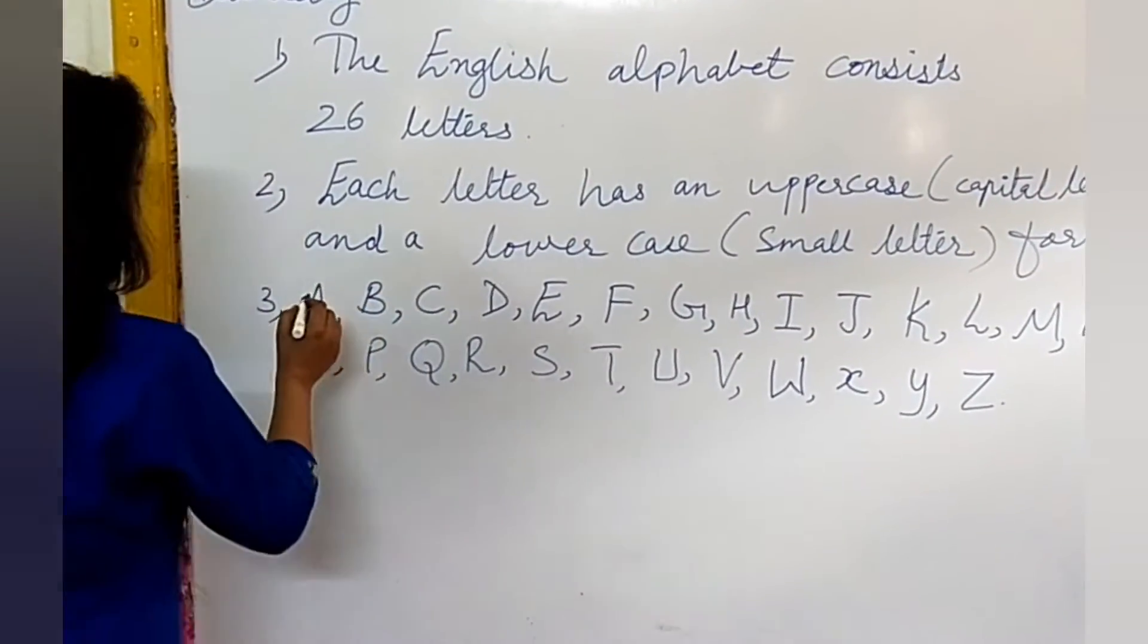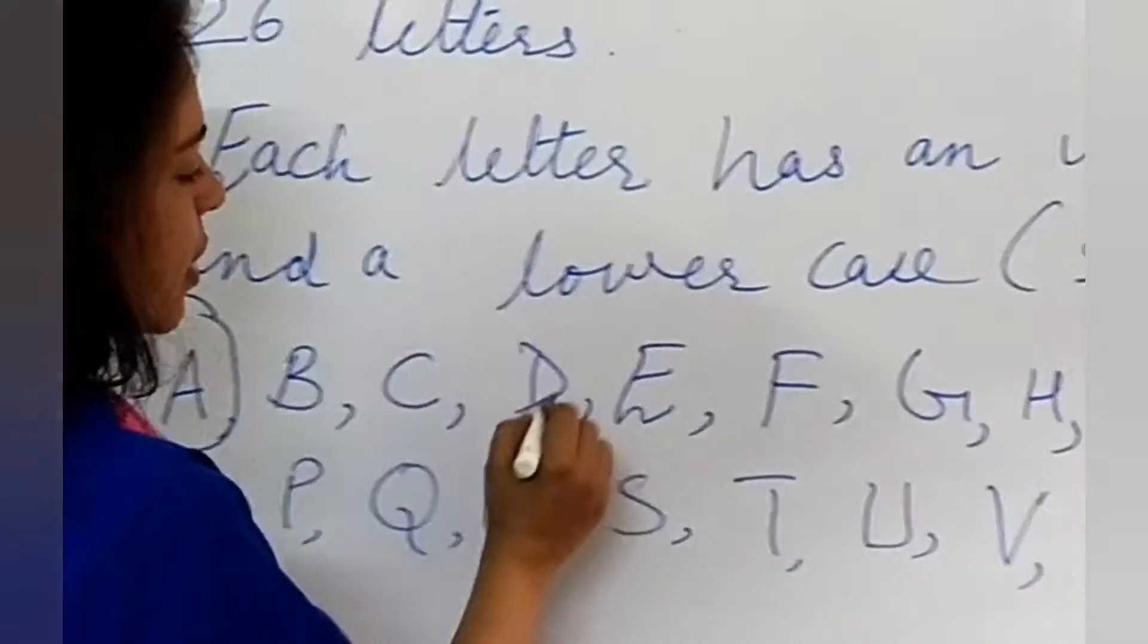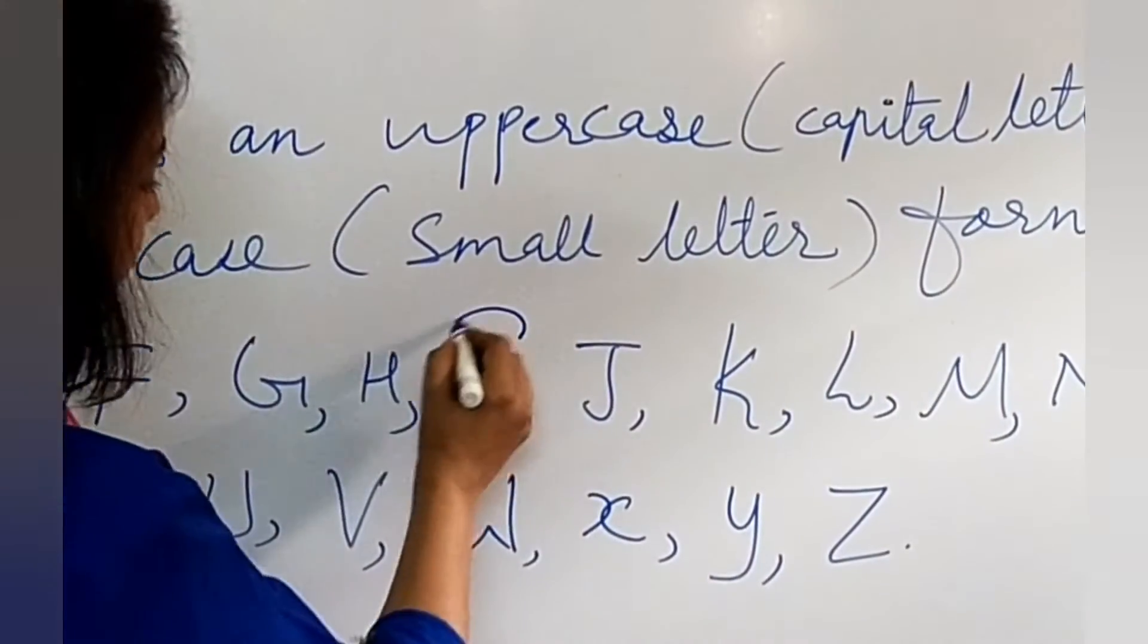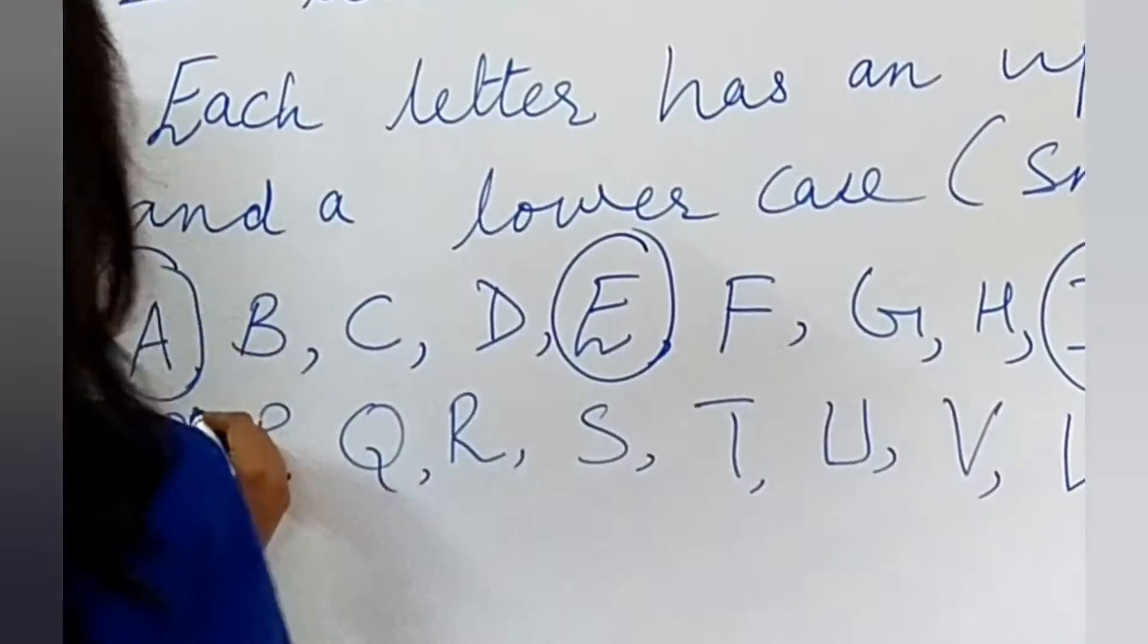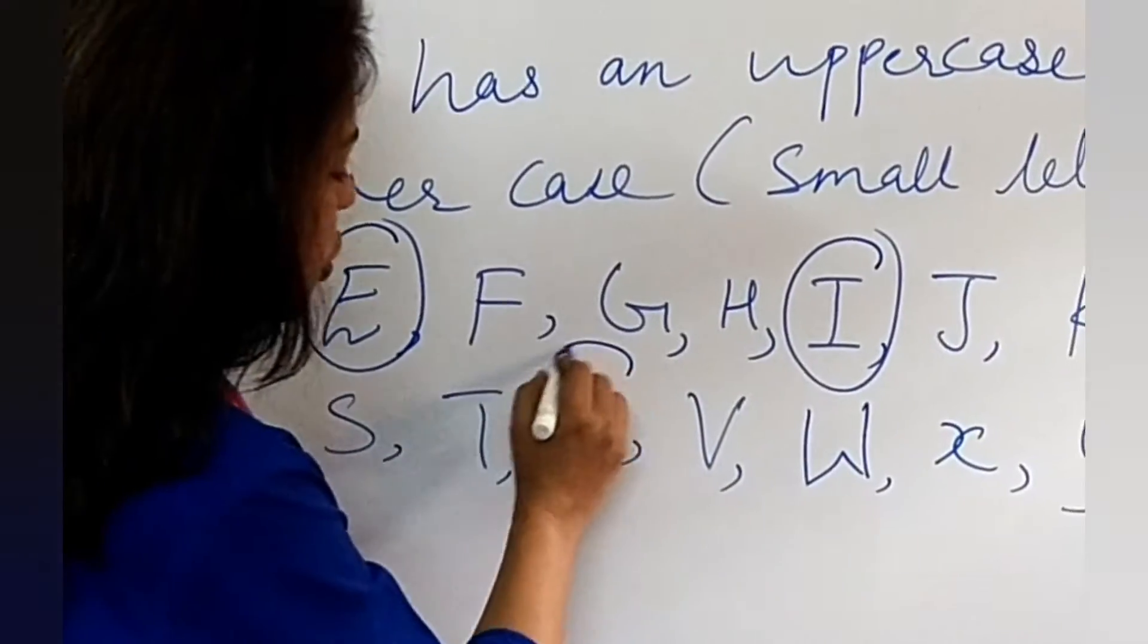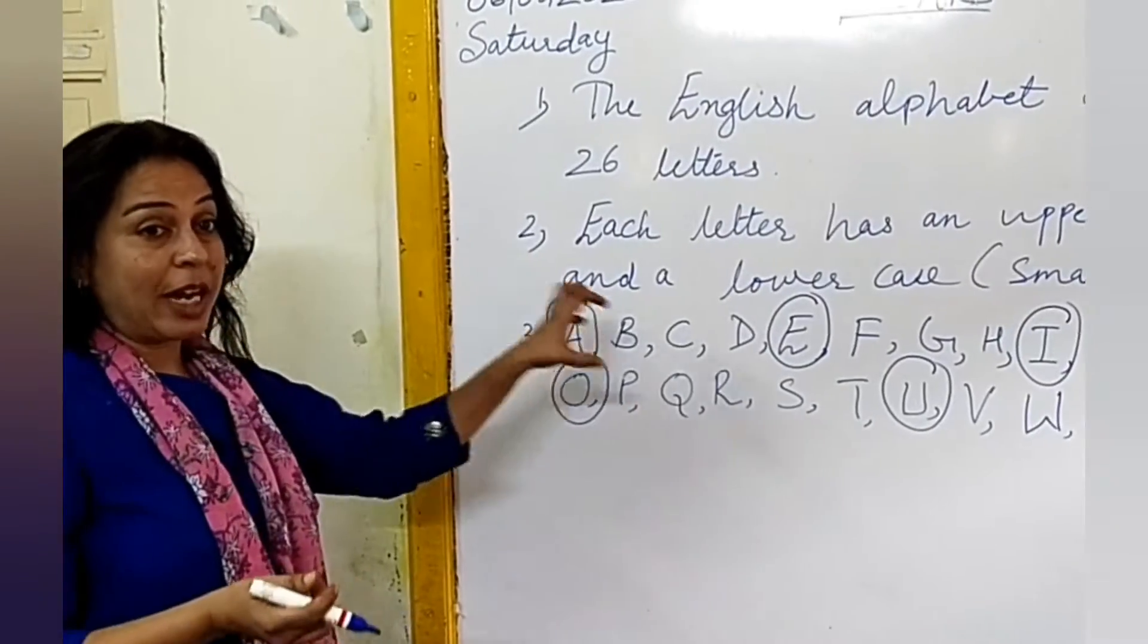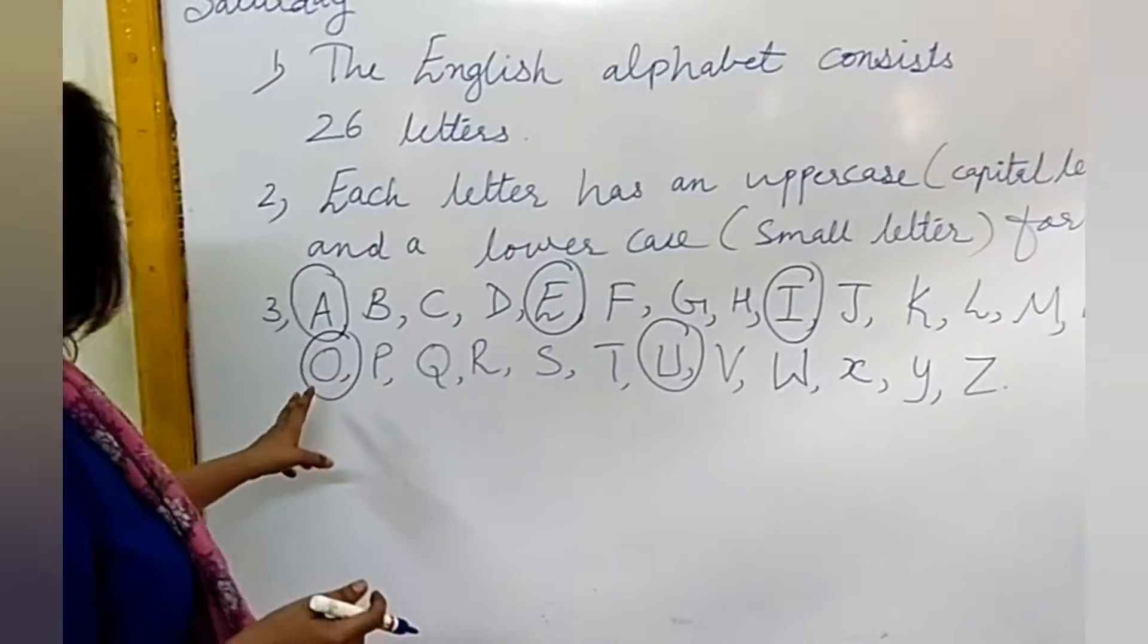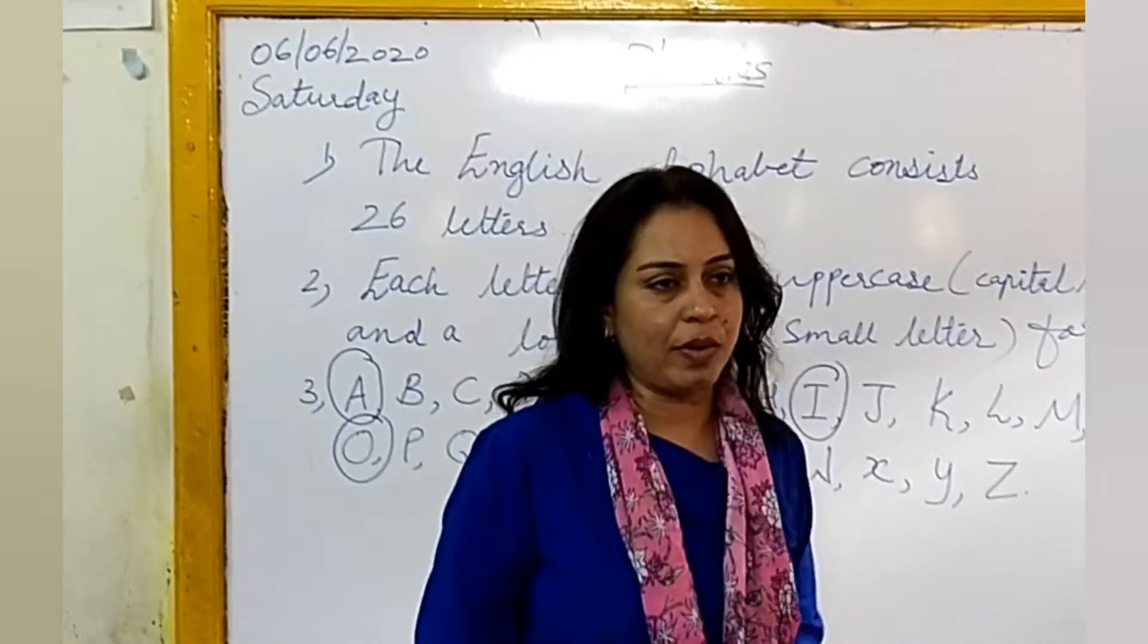First one is A. Then E. Then I. Then O. Then U. Now, let's count. There are 5 vowels: 1, 2, 3, 4, and 5. Yes, these are 5 vowels.